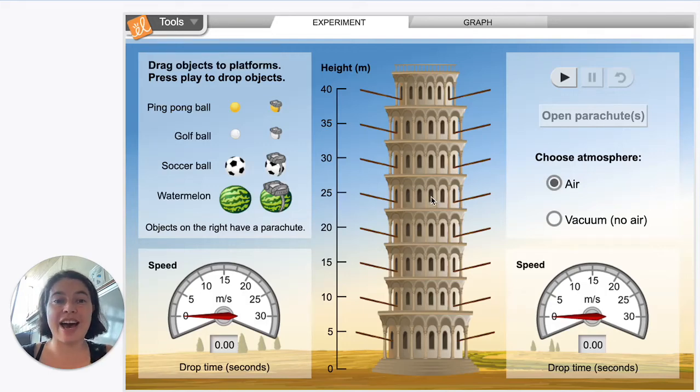All right, let's look at how opening a parachute affects the terminal velocity of various objects.